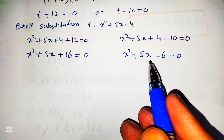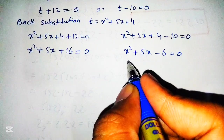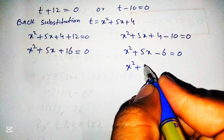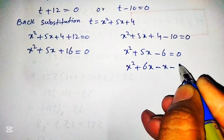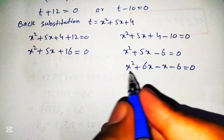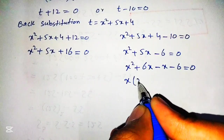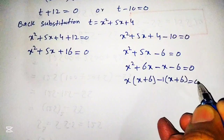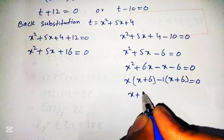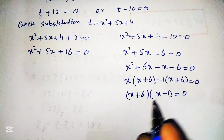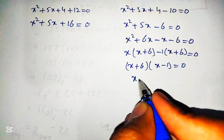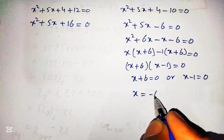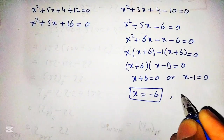We simplify these two equations. The second equation, x² plus 5x minus 6 equals 0, can be factored. We write it as x² plus 6x minus x minus 6 equals 0, taking x common from the first two terms gives x into x plus 6, and taking minus 1 common from the last two terms gives minus 1 into x plus 6. So we get x plus 6 into x minus 1 equals 0, giving x equals minus 6 or x equals 1.